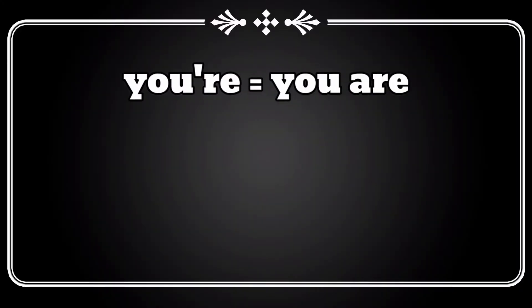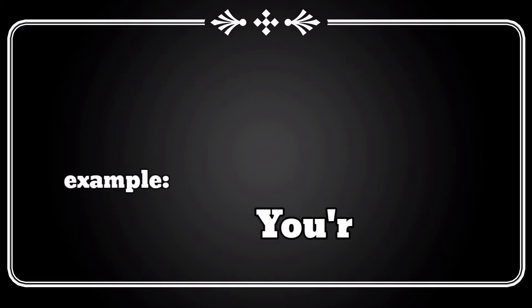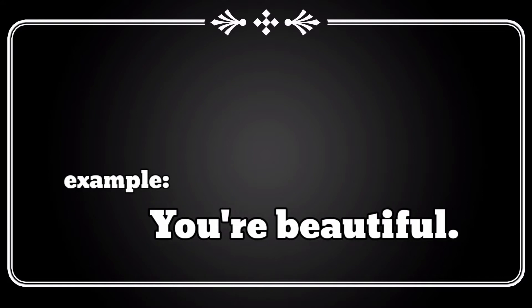...they have unique and different purposes. Now, first let's talk about 'you're'. 'You're' is a contraction of the phrase or words 'you are'. Like when you say 'you are beautiful', so you can say 'you're beautiful'. Easy enough to remember, right? Now let's have more examples.